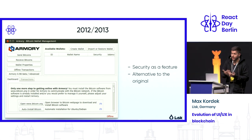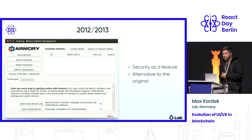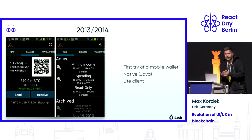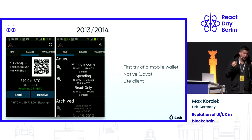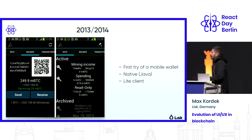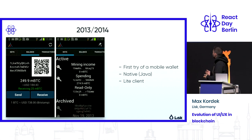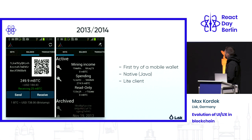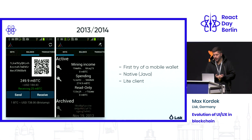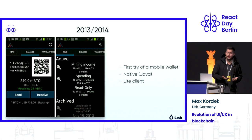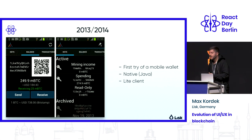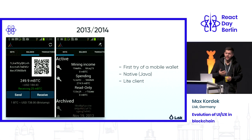This basically kick-started further development of better wallets. The next step was to move to a new platform — the mobile platform. Here we see Mycelium, which didn't look that beautiful at the time, but it was a first try to bring blockchain technology and cryptocurrencies to mobile. Of course, you can't download 100 gigabytes of data onto your phone, especially not in 2013, so they were one of the first to implement a light client — meaning you access the network directly without downloading the data yourself.